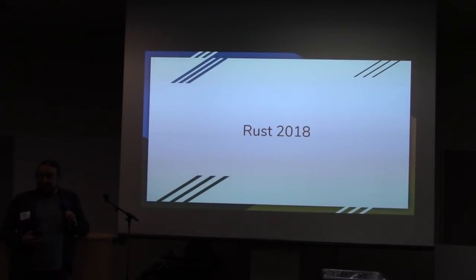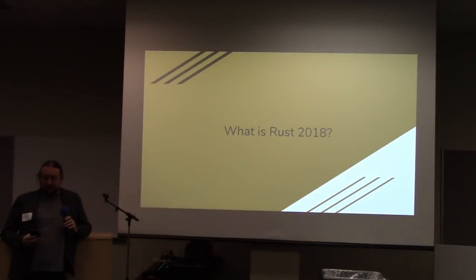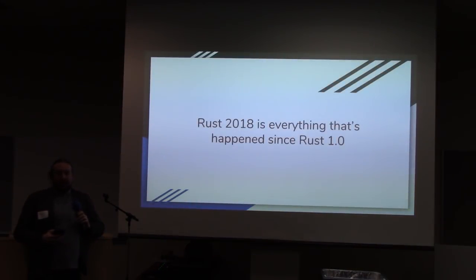So Rust 2018 came out last December, and at the time there was a lot of confusion about what Rust 2018 actually was. So what is Rust 2018? Well, one way of looking at it is that Rust 1.0 is Rust 2015, and Rust 2018 is everything that's changed between then and Rust 1.31.